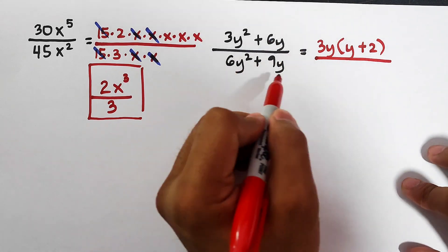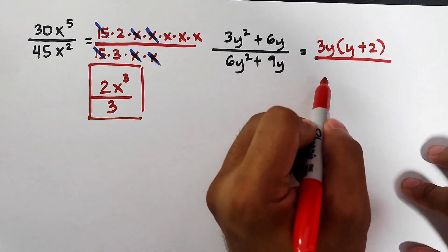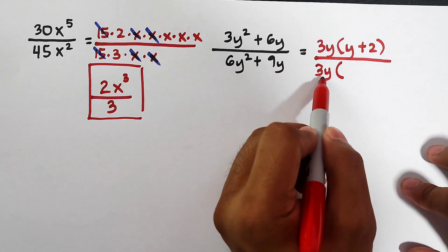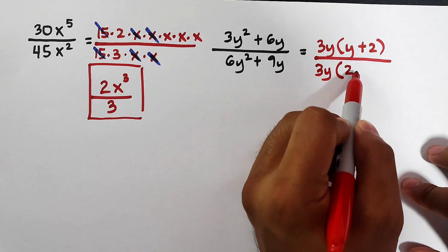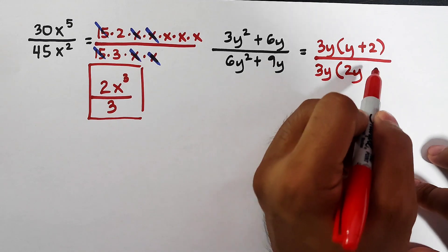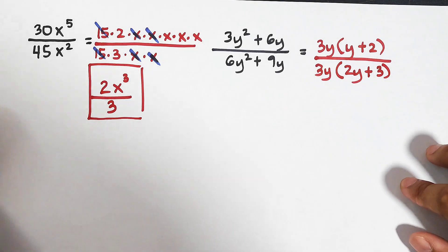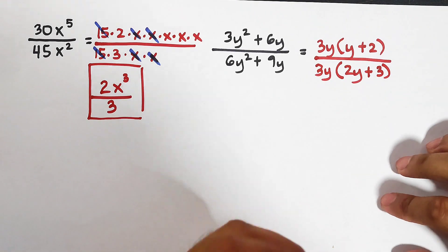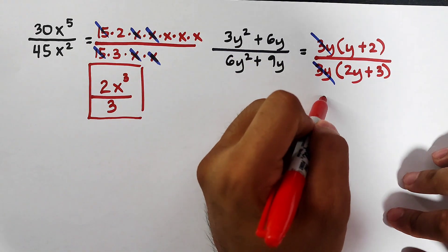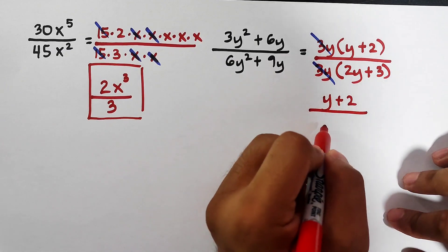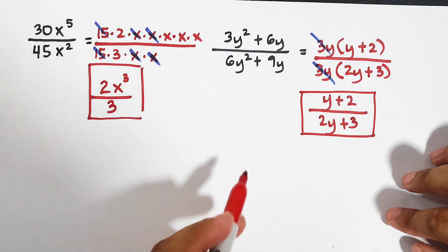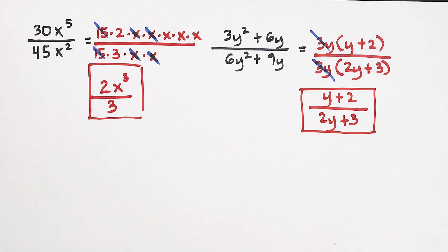For the denominator, the common factor is also 3y. Dividing 6y squared by 3y gives 2y, and 9y divided by 3y gives plus 3. We can see that 3y over 3y cancels, and what remains is y plus 2 over 2y plus 3. This is the simplified form of the second expression.